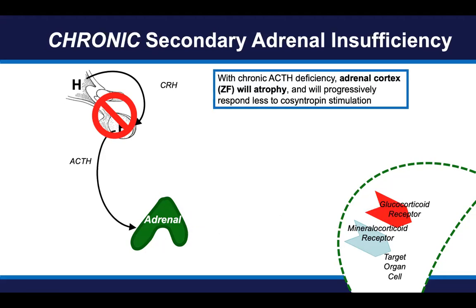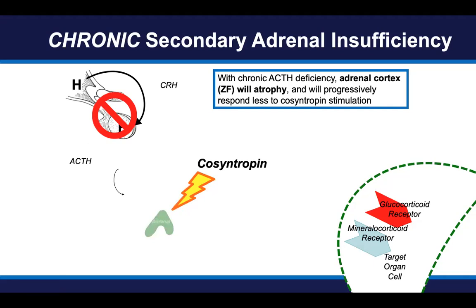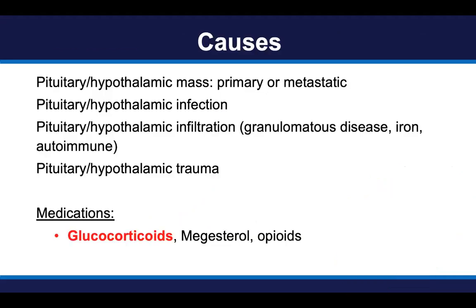In contrast, chronic secondary adrenal insufficiency refers to a situation where the deficiency of ACTH has been long term — many months or even years. ACTH is not only a stimulant of adrenal steroid hormone production, it is also a stimulant of adrenal cortical health and growth. With chronic ACTH deficiency, the adrenal cortex — mainly the zona fasciculata, the layer that makes cortisol — will gradually atrophy and will progressively respond less and less to ACTH. So with long-term ACTH deficiency, even if you gave a robust amount of cosyntropin by IV, there is still a suboptimal response of cortisol production.